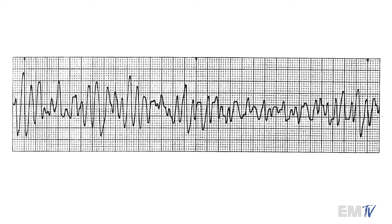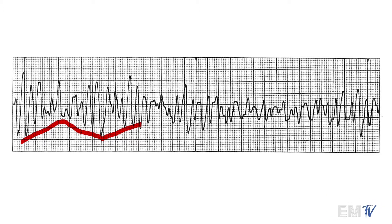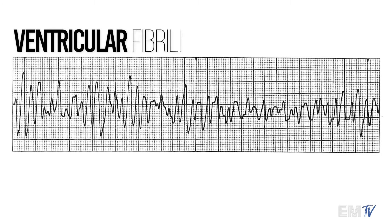Now I know that there are some elements here that may appear like it's torsades. You'll notice that there's a little bit of that twisting movement here, but with torsades you have to remember that the twisting of the points — that flipping of the axis — is very, very consistent and predictable. In this one there's no semblance of regularity to the rhythm, so this is v-fib.